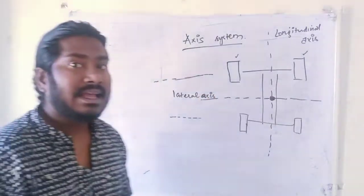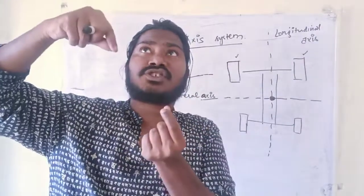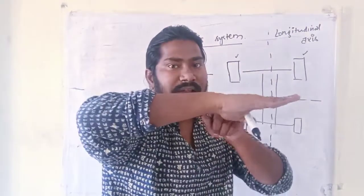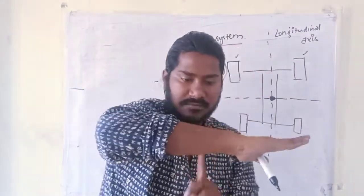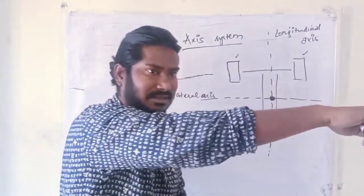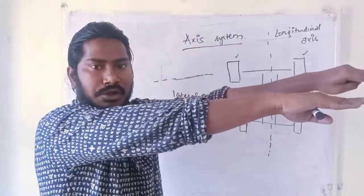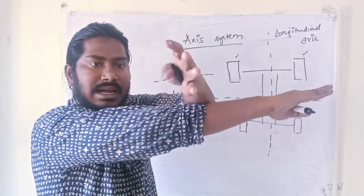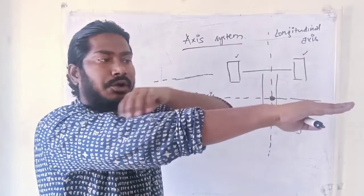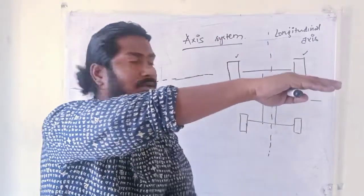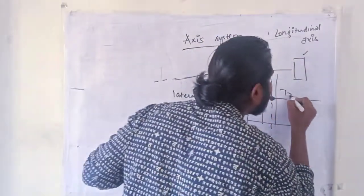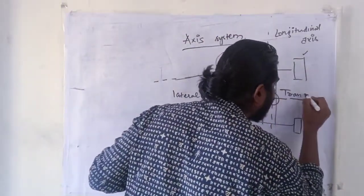That is the lateral axis. The axis that passes through top and down — if this is my vehicle moving in this direction — the longitudinal direction is front to rear, the lateral direction is right to left, and from top to down is the transverse axis, which I am denoting with a circle.